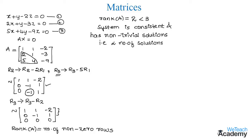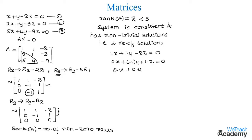Now let us find the solutions. Using the reduced matrix, from row 1 we get x plus y minus 2z is equal to 0. From row 2 we get minus y plus z is equal to 0. From row 3 we get 0 into x plus 0 into y plus 0 into z is equal to 0. Let us name these equations 4, 5, and 6.